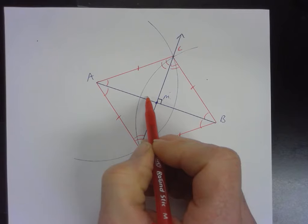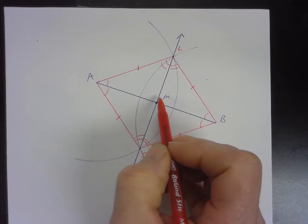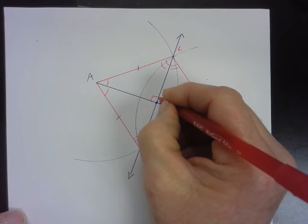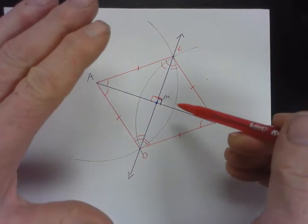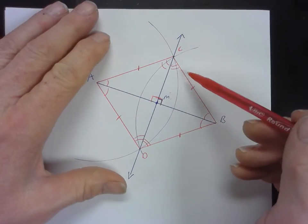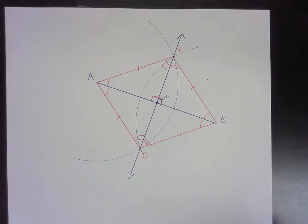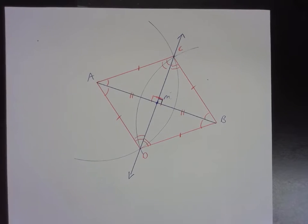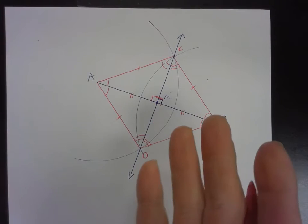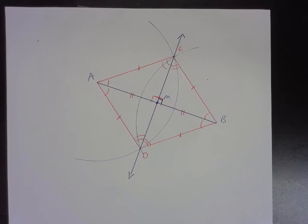These two angles right here are corresponding parts of congruent triangles and they form a linear pair. If they're congruent and form a linear pair, they have to be right angles. So by doing the construction the way we do it, we're forming all these congruent triangles. AM and BM are corresponding parts of congruent triangles, so M is the midpoint.